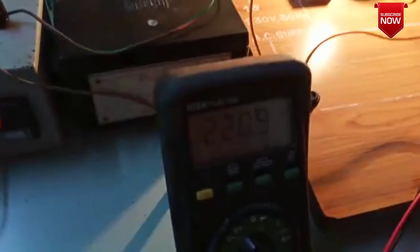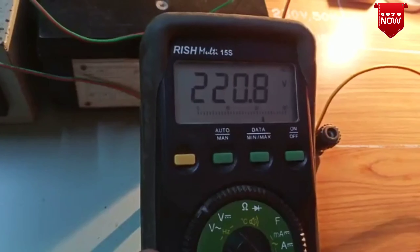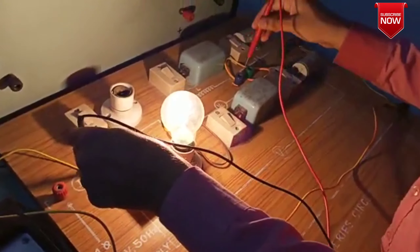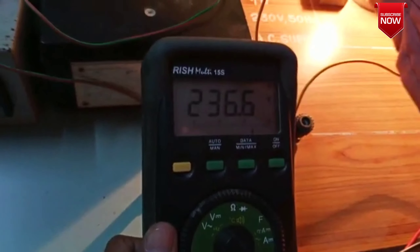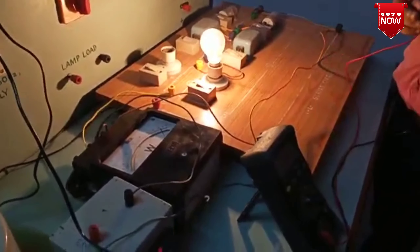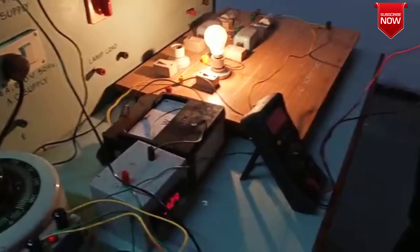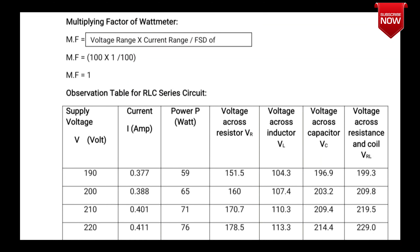For input supply voltage of 230 volts, the current is 0.422 ampere and power consumed by the RLC series circuit is 81 watt. The voltage across the inductor VL is 186.5 volts, voltage across the resistor is 215.5 volts, and voltage across resistor and inductor (VRL) is 236.6 volts.